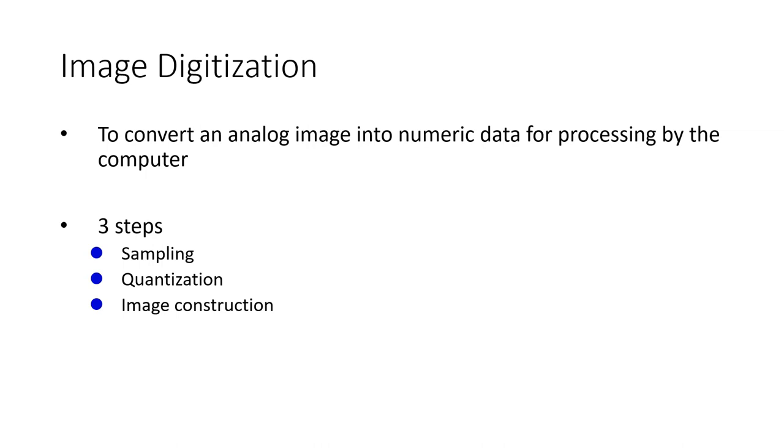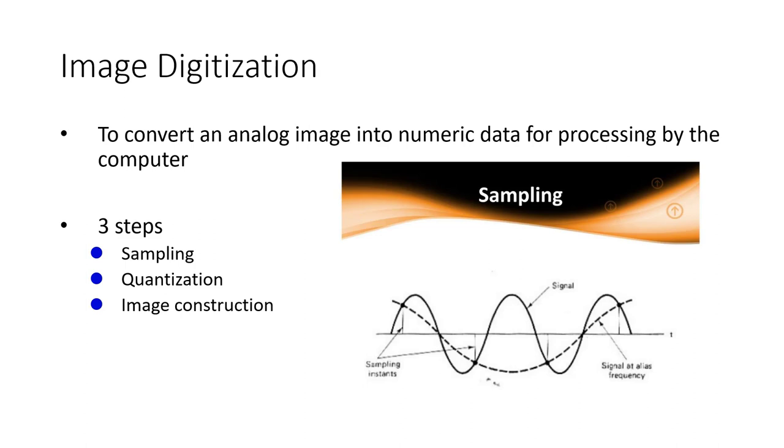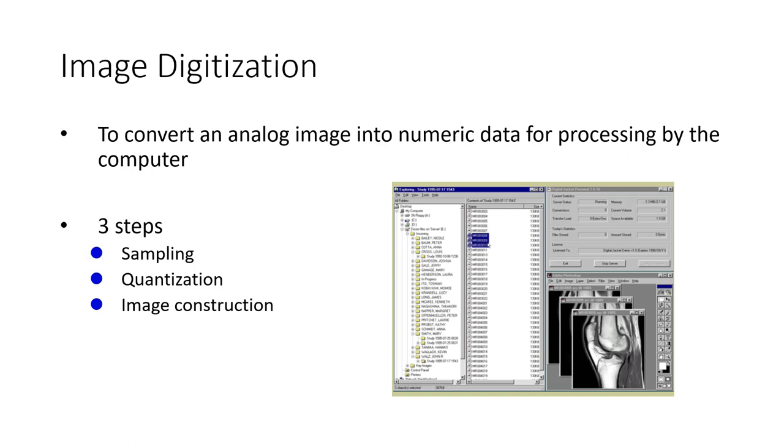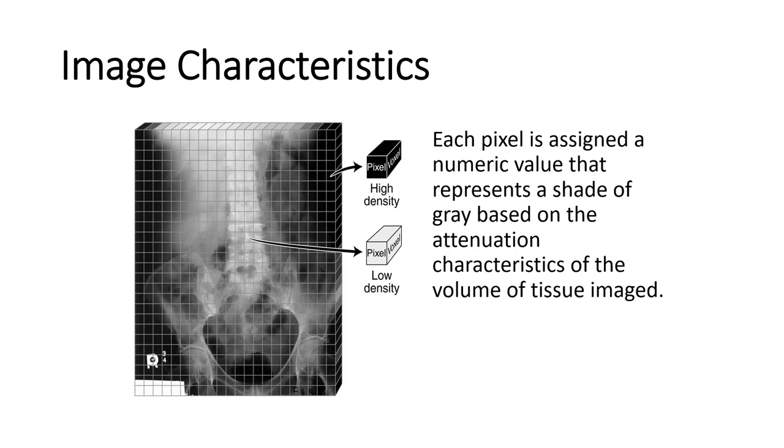To convert an analog image into numeric data for processing by the computer, there are three steps. The first of which is sampling the frequency of the energy wave. Next, we need to take that sample and quantify it or turn it into numbers. Then, we take those numbers and we utilize those to make intensities, which we can see.